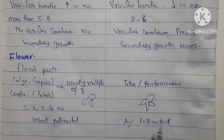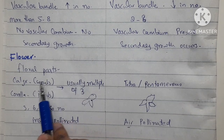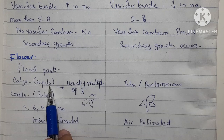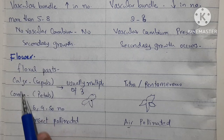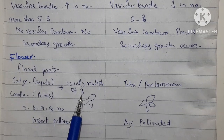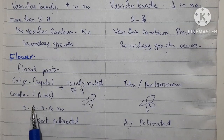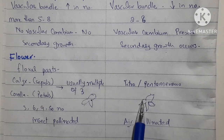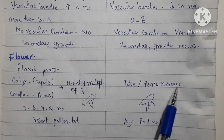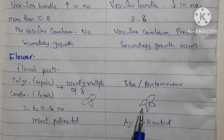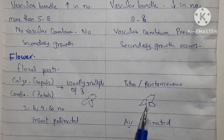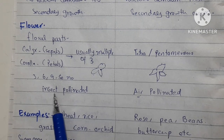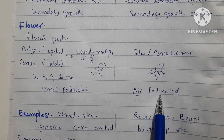Now let's study the difference from the flower point of view. The floral parts — sepals and petals — in monocot flowers are usually multiples of 3, so there can be 3, 6, 9, and so on. In dicot flowers, these petals and sepals are tetramerous or pentamerous, meaning they are multiples of 4 or 5. In monocot, pollination is carried out by insects, whereas in dicot, pollination is carried out by air.